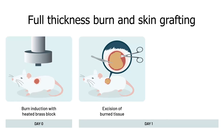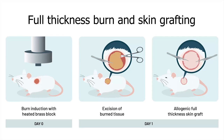Necrotic tissue was surgically excised 24 hours after the burn injury. Full thickness skin grafts harvested from the tail of a donor mouse were laid over the excised burn wounds. The grafts were then secured with a surgical adhesive.